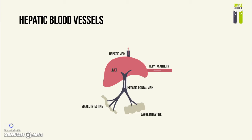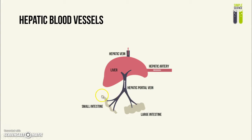Next, we have the hepatic blood vessels. There is the hepatic artery, although that is not required knowledge. The key ones to know are the hepatic portal vein, which takes blood from the digestive system — including the small intestine and large intestine — into the liver, and the hepatic vein, which takes blood from the liver towards the vena cava to drain back to the heart.